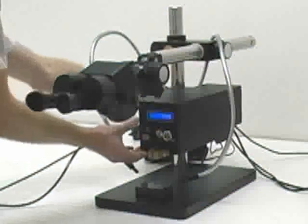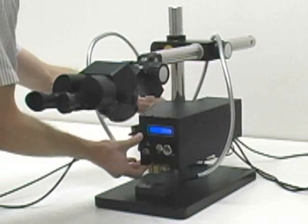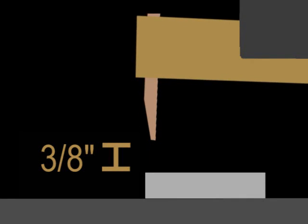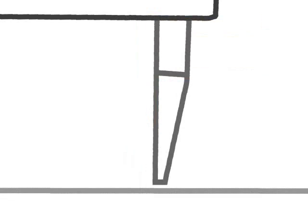First, set up the weld head and electrodes to the desired height above the surface to be welded. A gap of 3/8 of an inch, in addition to the workpiece thickness, will ensure that when the electrodes are lowered they will be vertical. This is recommended but not necessary.